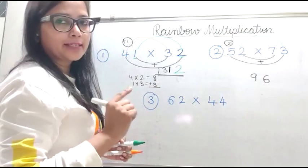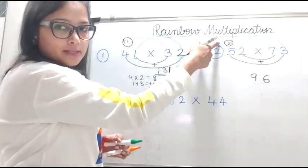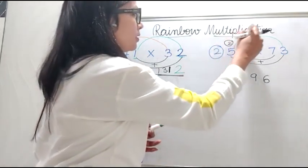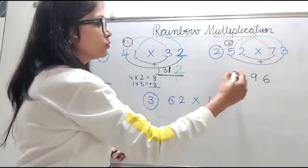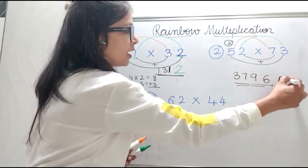Remember, always write the unit digit in your answer place and carry over the rest number. Right? Now let's multiply the last number by both tens. So five sevens are 35 plus two. That is 37. So this is my answer.